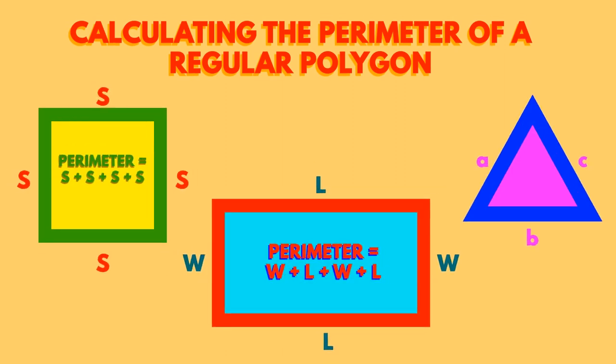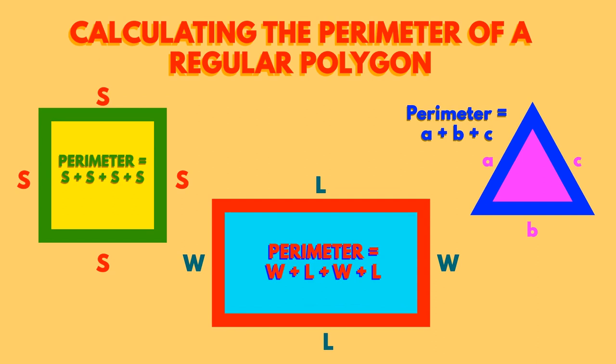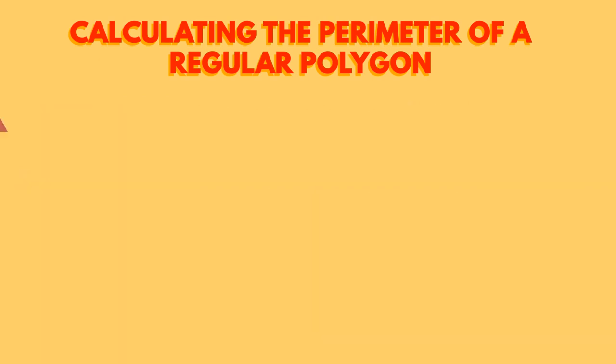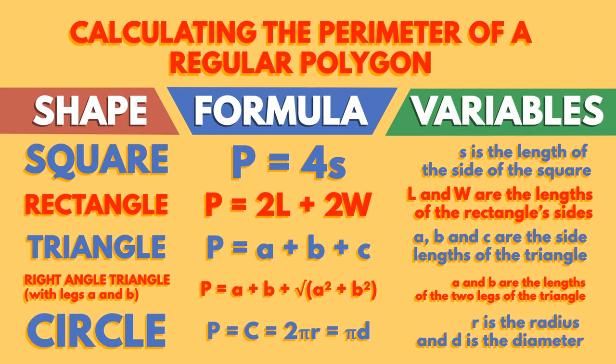To work out the perimeter of a regular polygon, we need to measure the total length of its outside edge. We can also calculate it using some formula that you may have seen before.